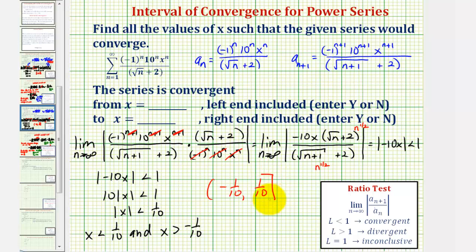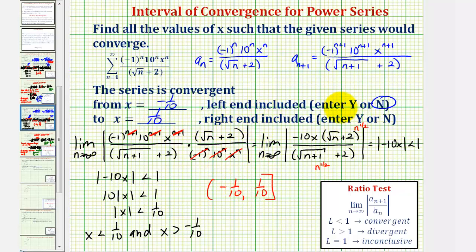So the interval of convergence is from negative one-tenth to positive one-tenth, closed on the right. For the homework question: the series is convergent from x equals negative one-tenth. It does not include the left endpoint because the interval is open there — so that answer is no. To x equals positive one-tenth, which is included, so the right endpoint answer is yes.